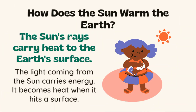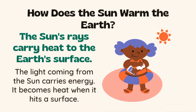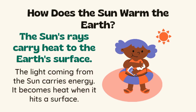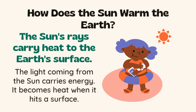How does the sun warm the earth? The sun's rays carry heat to the earth's surface. The light coming from the sun carries energy, and it becomes heat when it hits a surface.